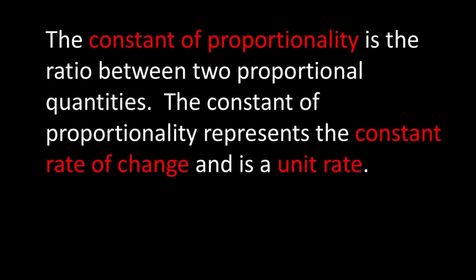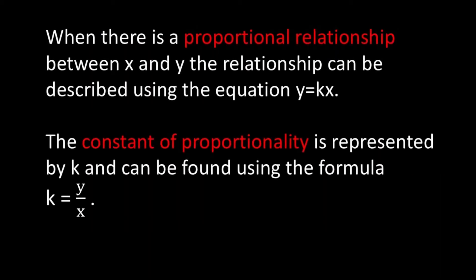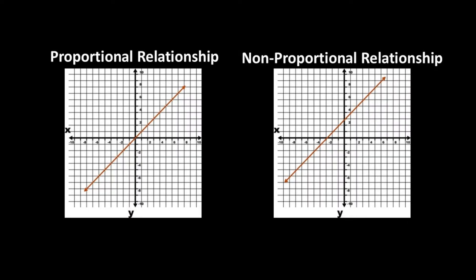The constant of proportionality is the ratio between two proportional quantities. It is also the constant rate of change and it is a unit rate. When there is a proportional relationship between x and y, the relationship can be described using the equation y equals kx. The constant of proportionality is represented by the variable k and can be found using the formula k equals y over x, or y divided by x. It is also important to note that linear graphs that go through the origin represent proportional relationships and will have a constant of proportionality.